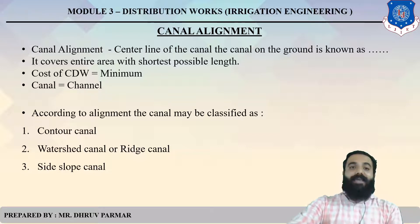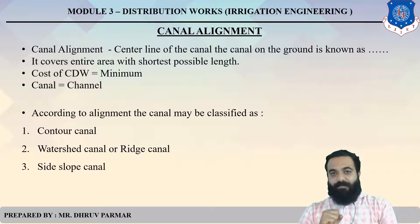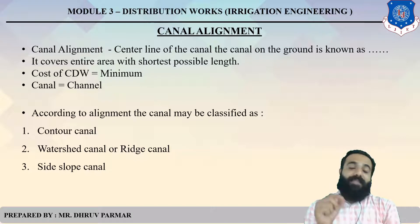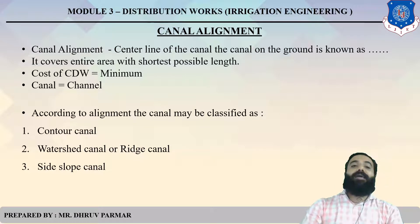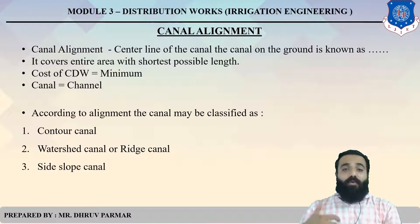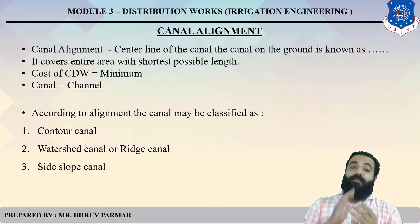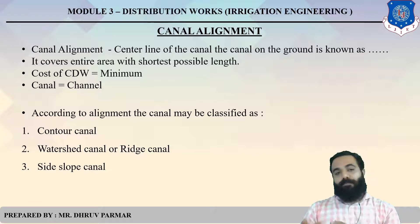Canal alignment covers the entire area with the shortest possible line. For example, in Gujarat, the canal passes through locations such that it covers most of the entire area. The main purpose of designing canal alignment is that if canal alignment is proper, the cost of cross drainage work is minimized.